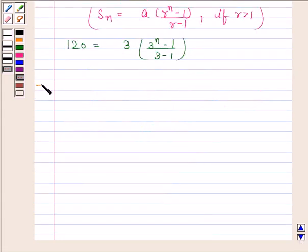This implies 120 is equal to 3 by 2 into 3 to the power N minus 1. And this implies 240 by 3 is equal to 3 to the power N minus 1.